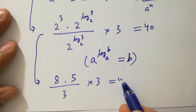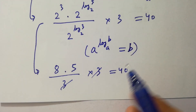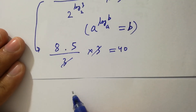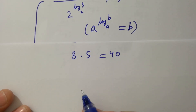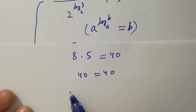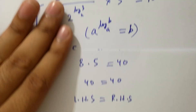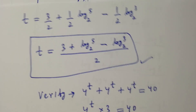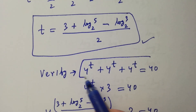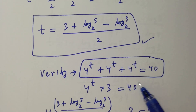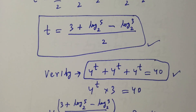As a to the power log b to the base a equals b, we get 8 times 5 over 3 times 3 equal to 40. The 3 and 3 cancel, leaving 8 times 5 equal to 40, which confirms 40 equals 40. Left hand side equals right hand side, which shows the value of t satisfies 4 to the power t plus 4 to the power t plus 4 to the power t equal to 40. Thanks for watching, please subscribe to get notifications of new videos.